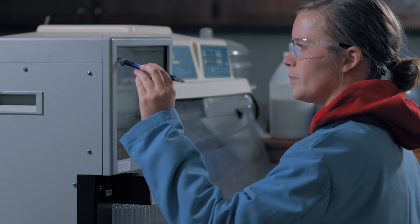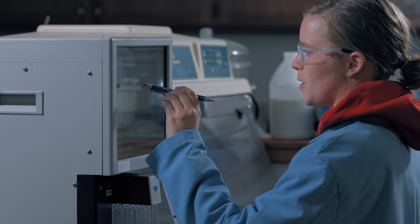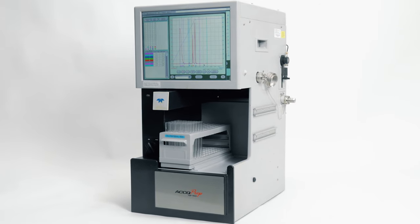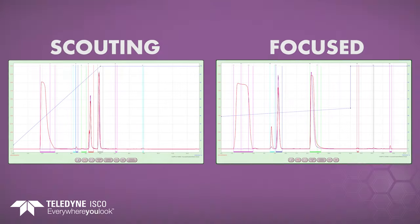It typically elutes in 5 to 10 minutes and increases resolution and loading. The Focus Gradient Generator is the fastest and simplest way to do prep HPLC method development.